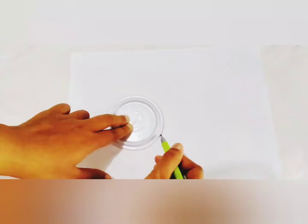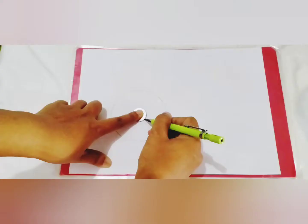First, draw a circle using the smaller lid of the cup on the blank paper like this. Then, in the middle of this circle, you can draw a small circle. You can use a coin to help you draw the small circle in the middle. Like this.